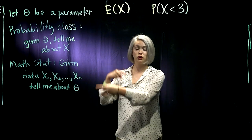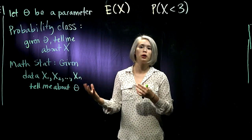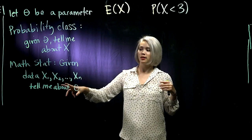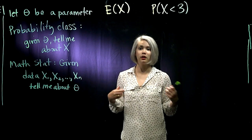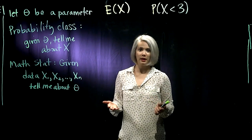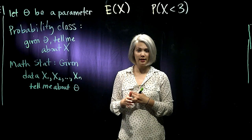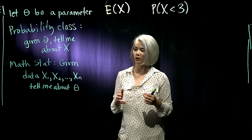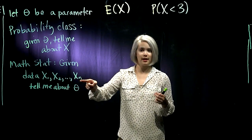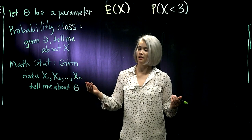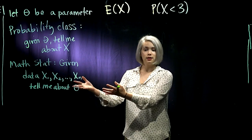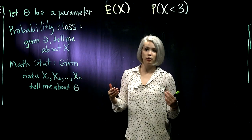Now in MathStat class, we're swapping it. We're swapping what we know and what we want to know. In MathStat class, we collect a bunch of data. Usually it's a random sample, meaning we have independent, identically distributed random variables. So X₁ through Xₙ is our data set of size n. And now we're saying, here's this data, tell me something about θ.